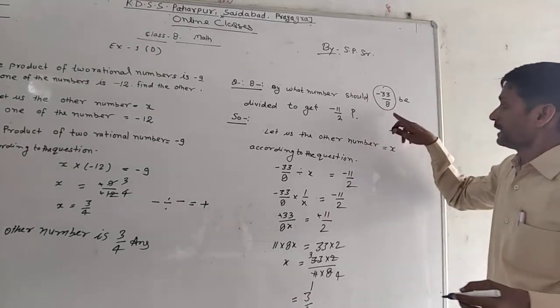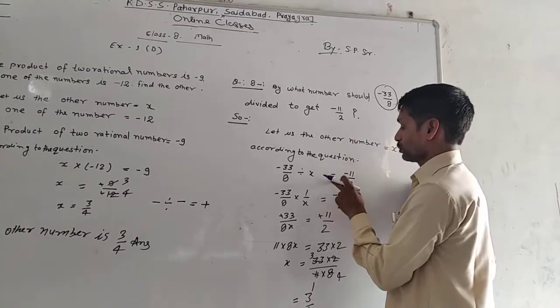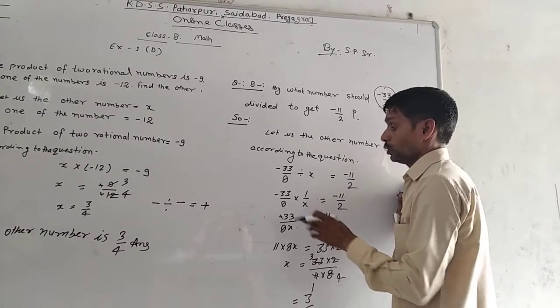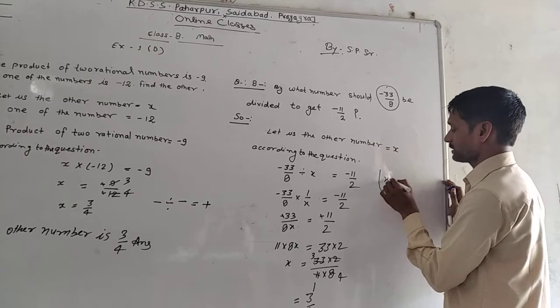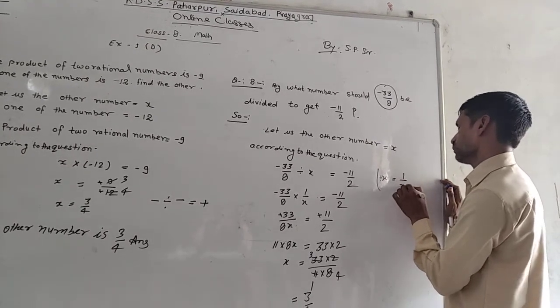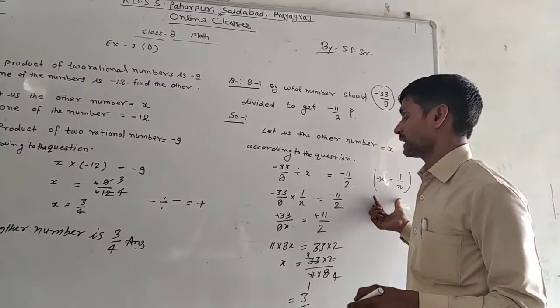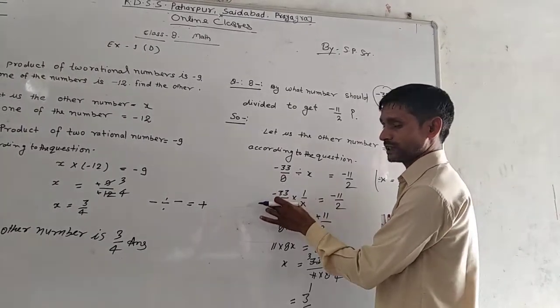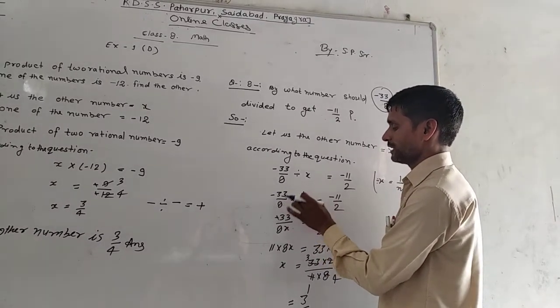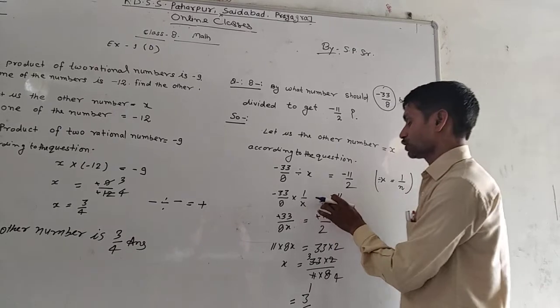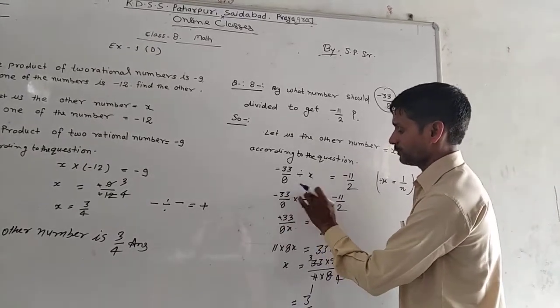Now 33 by 8 divided by x is equal to minus 11 upon 2. When x is in the denominator, we bring it to multiply: 33 upon 8 into 1 upon x is equal to minus 11 upon 2.